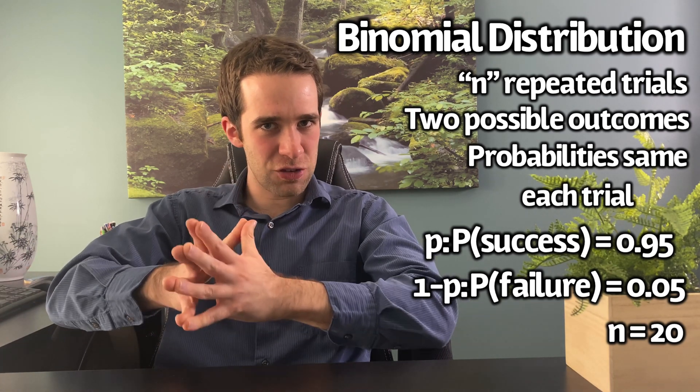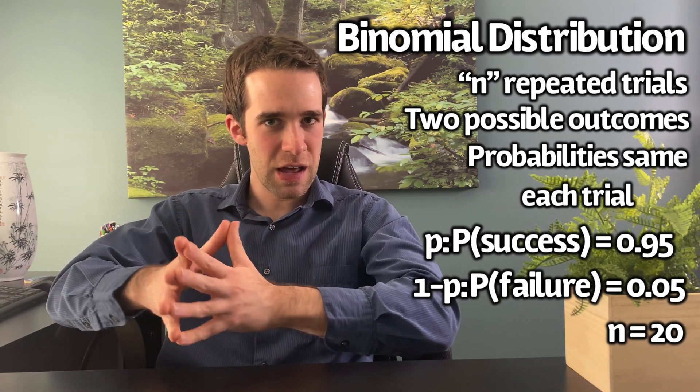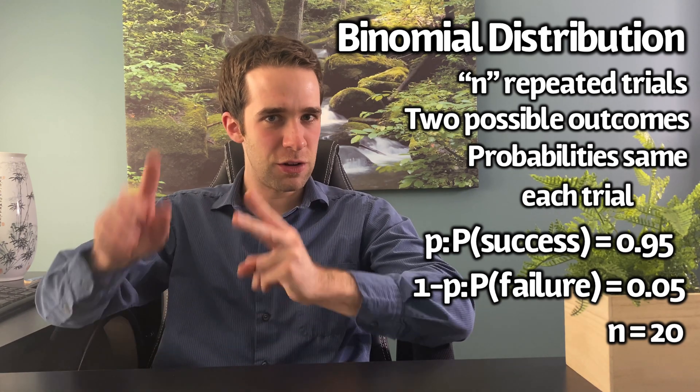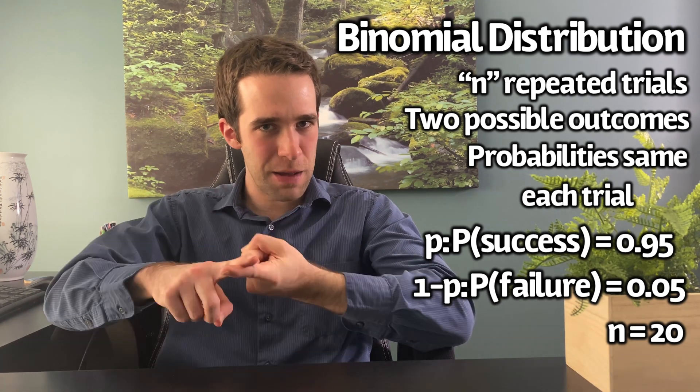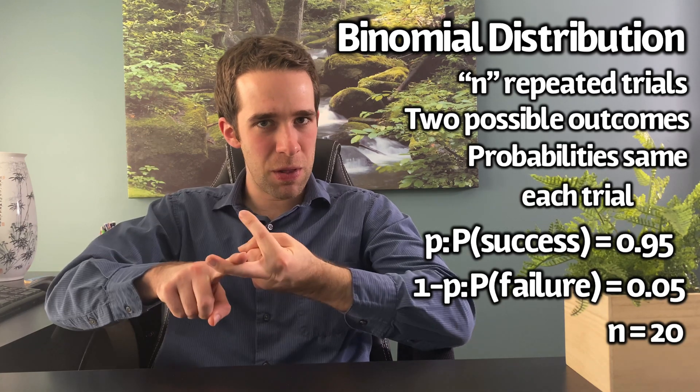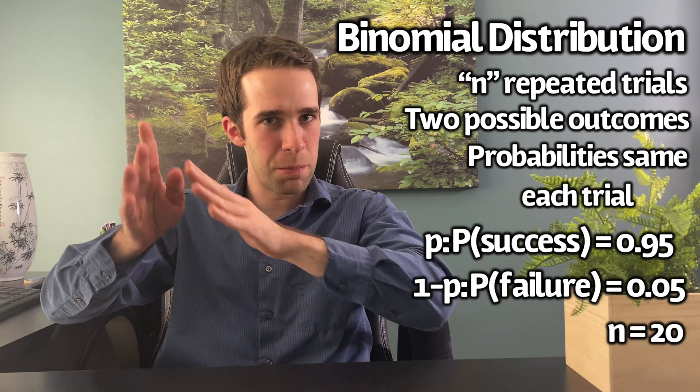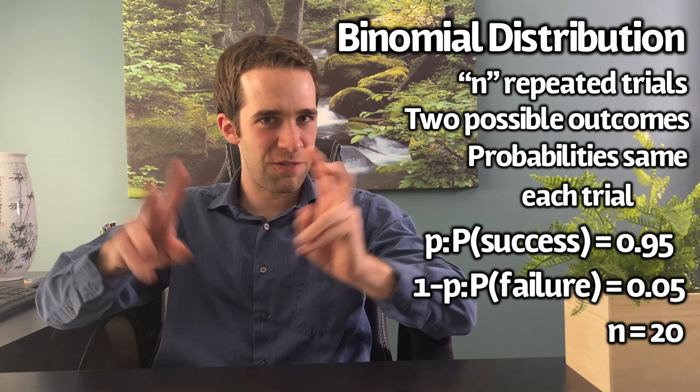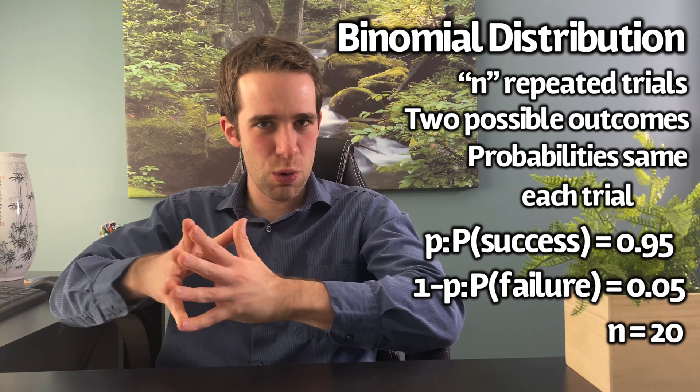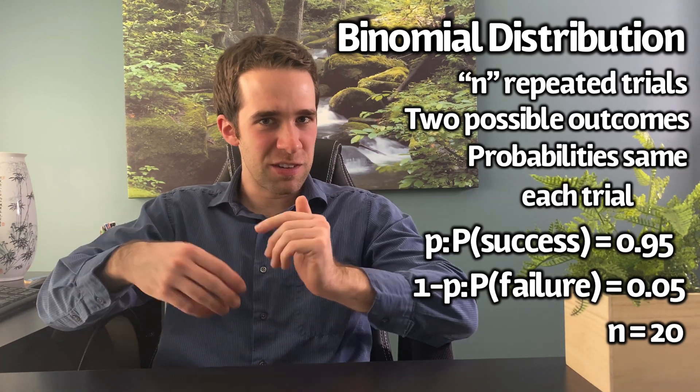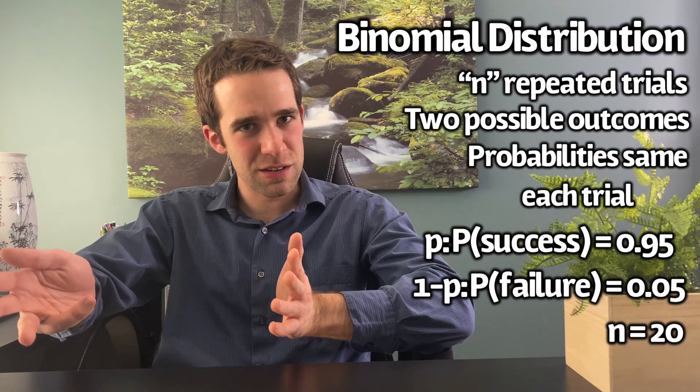This is an application for the binomial distribution and the binomial distribution is completely defined by two terms. That's the sample size n and the probability of success, often denoted by p. Sometimes you'll see the failure rate denoted as q or 1 minus p, but it's just 1 minus the success rate.